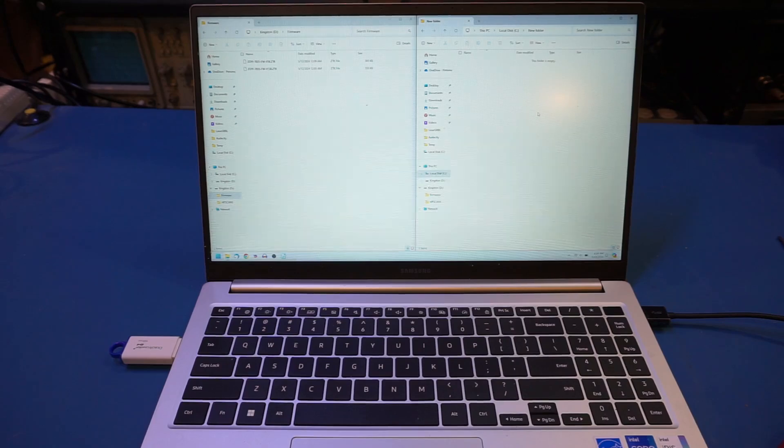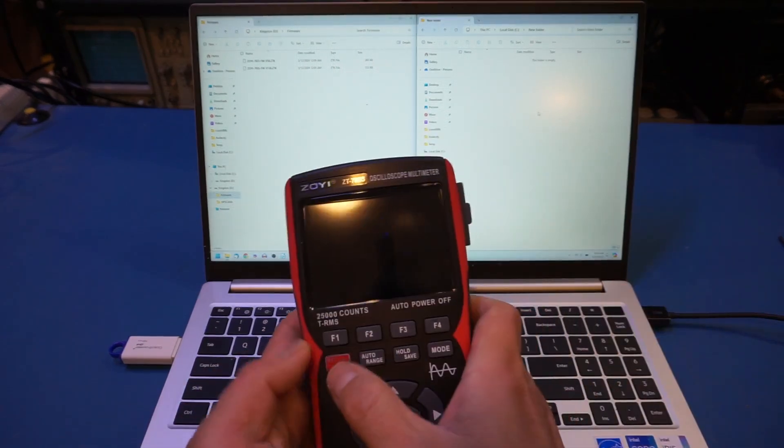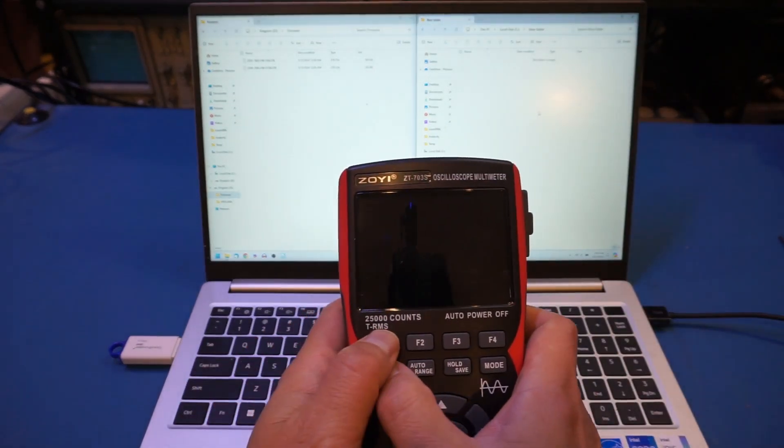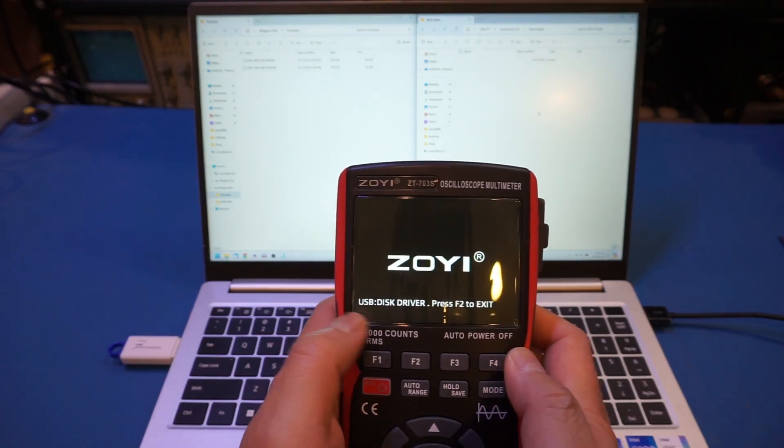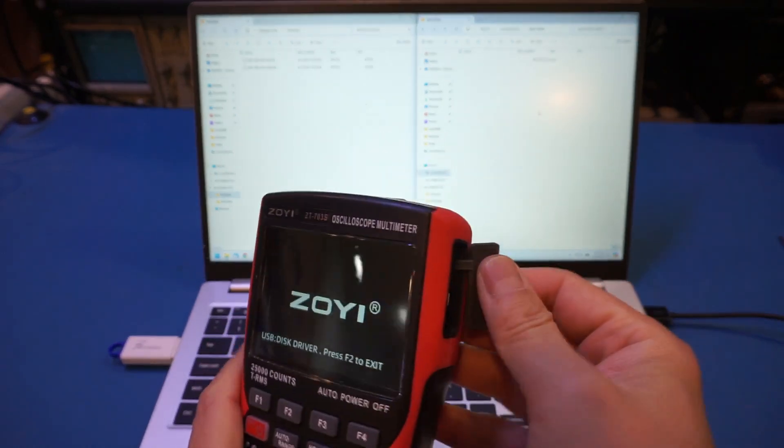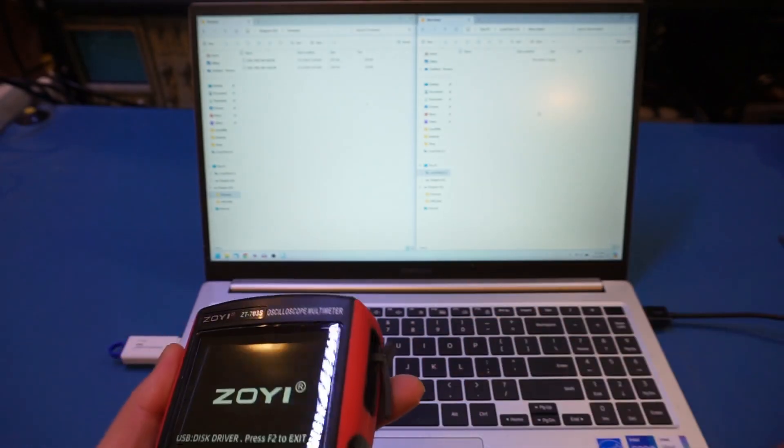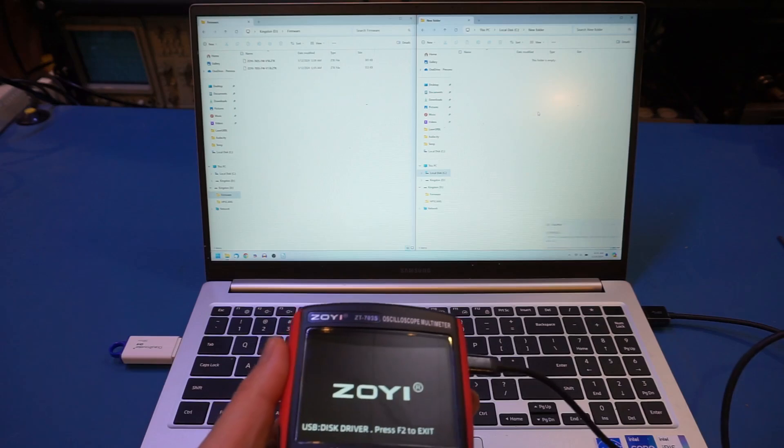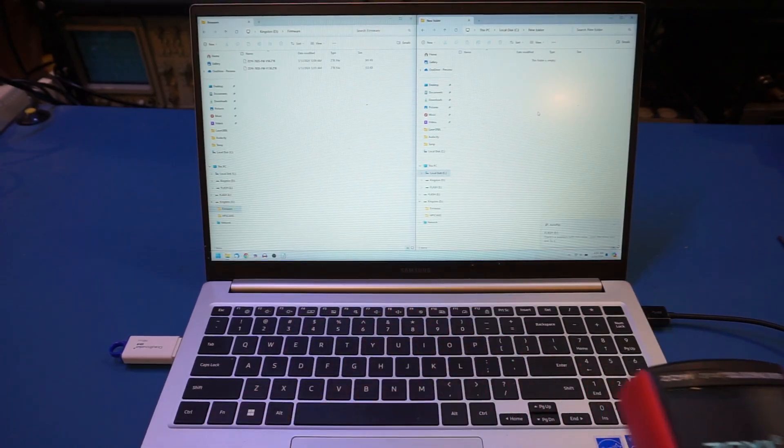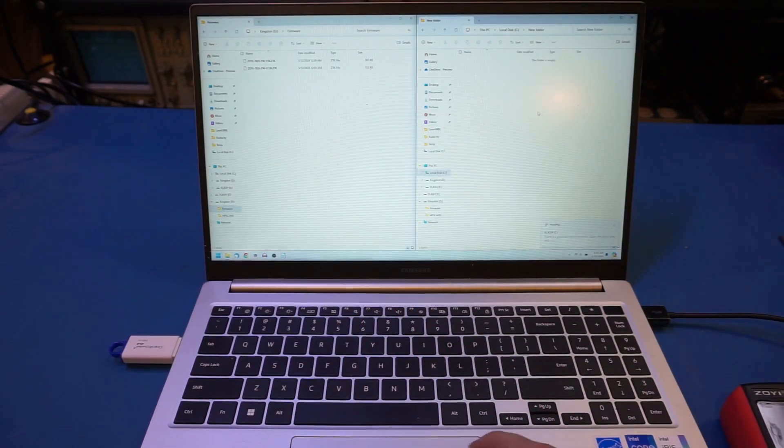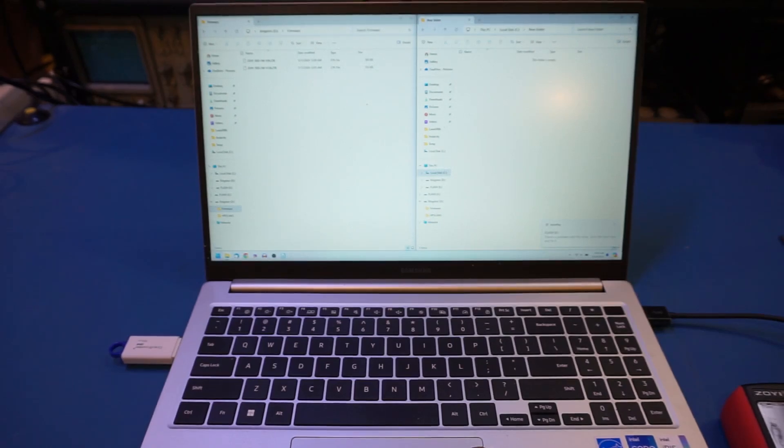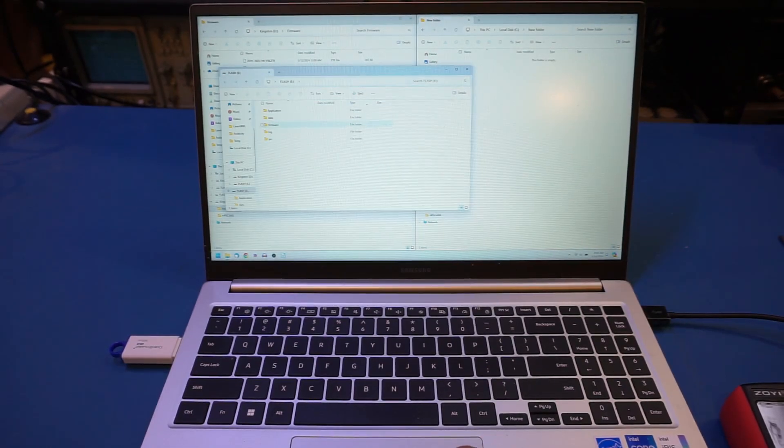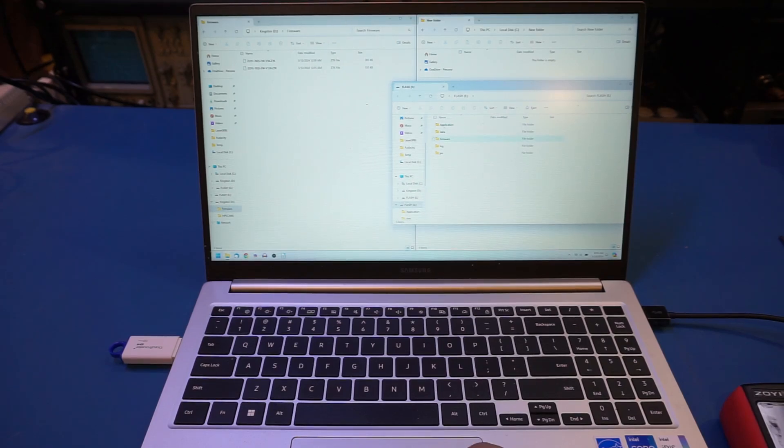All right, let's give it a try. According to the manual, I have to press both the F1 and power key together. Yep, and now we're in this disk driver mode. So hopefully we can just plug it in and it should recognize as a flash drive. And you can see we actually recognize it. So let me go here. I should be able to drag the firmware over to the firmware folder.